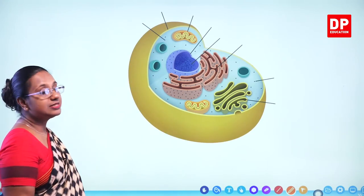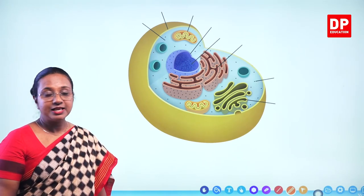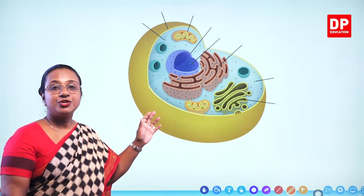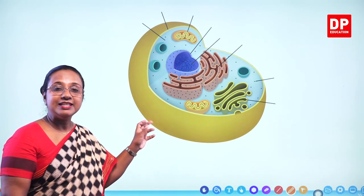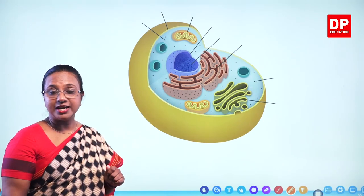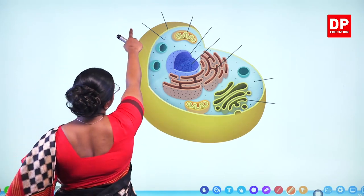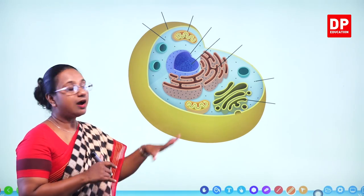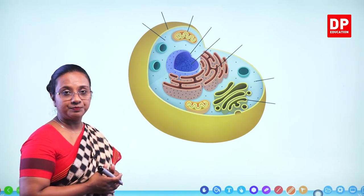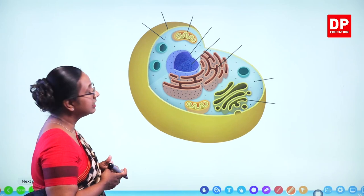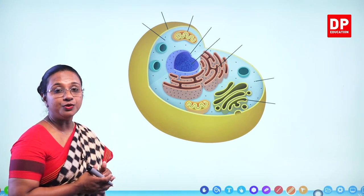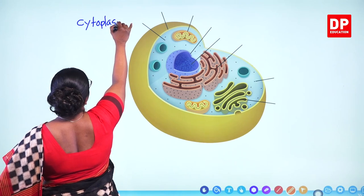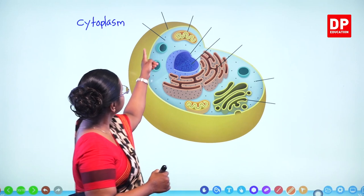Now we have discussed all the different types of organelles. Let us try to identify them in a cell diagram. The first arrow points to the blue coloured area spread all throughout the cell — that is the cytoplasm. The next one is this boundary.